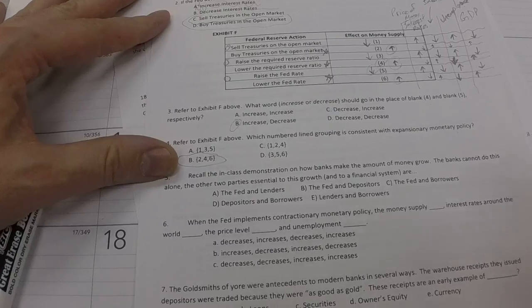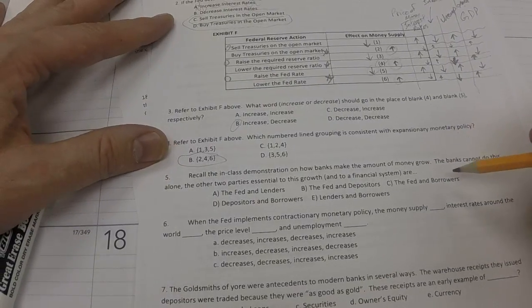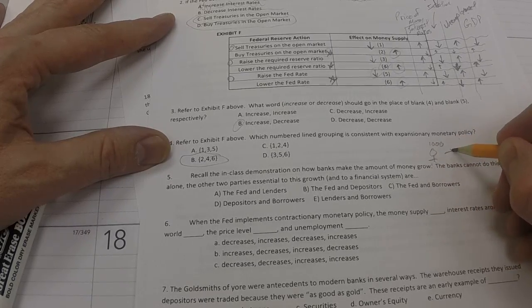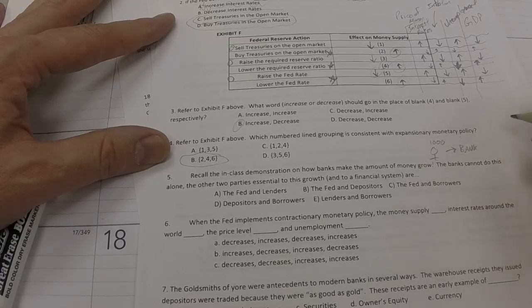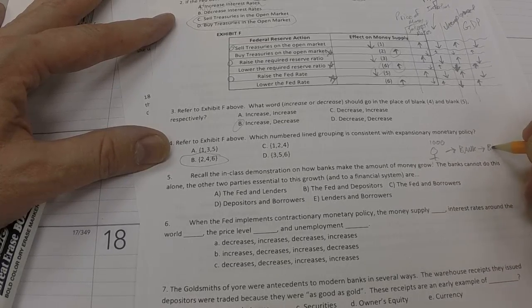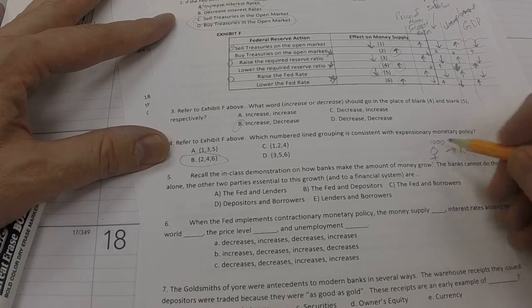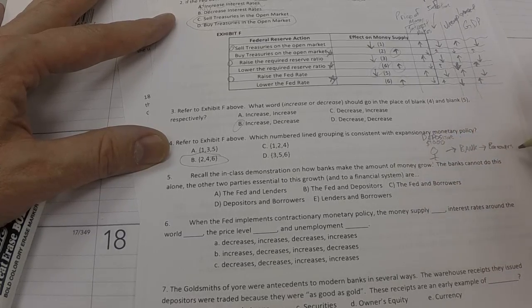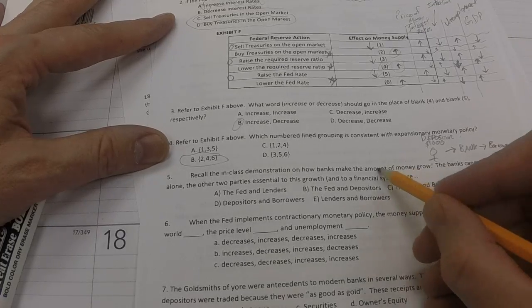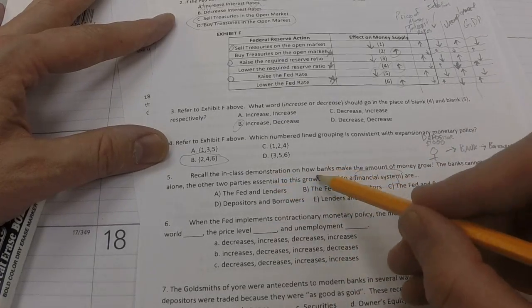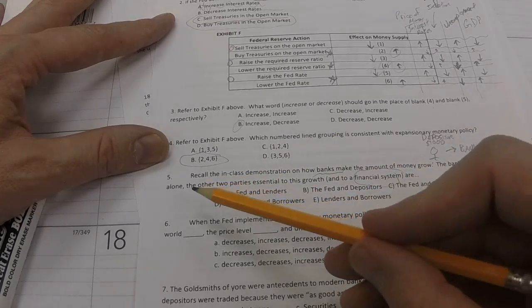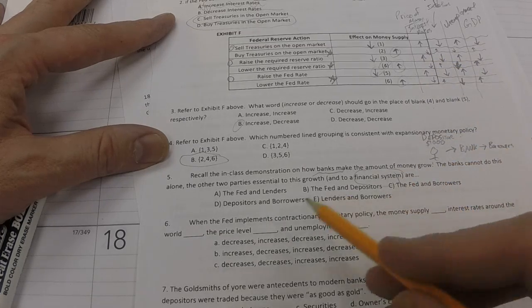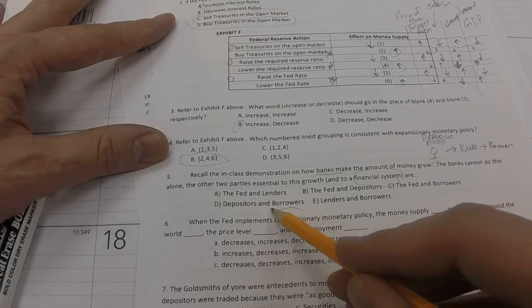Recall the in-class demonstration on how banks make the amount of money grow. If you recall that question, we had a person who started off with $1,000. And that $1,000 was then put in the bank. And that money was then sent out to borrowers. All right. This person who put their $1,000 in the bank is called a depositor. Depositors, banks, and borrowers together create what is called a financial system. And since they already mentioned banks in the first question, the banks cannot do this alone. The other two parties essential to this growth and to the financial system are depositors and borrowers, right there.